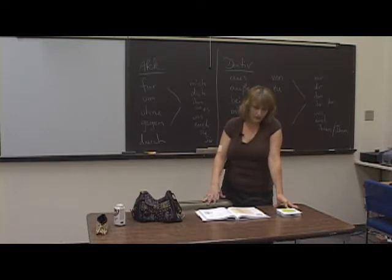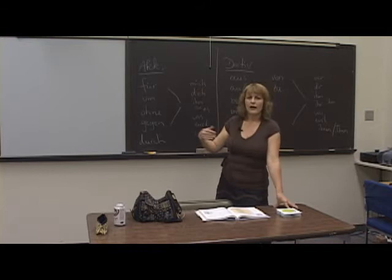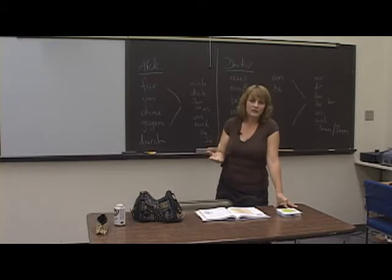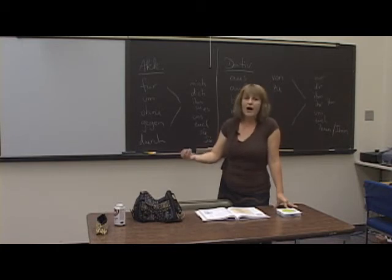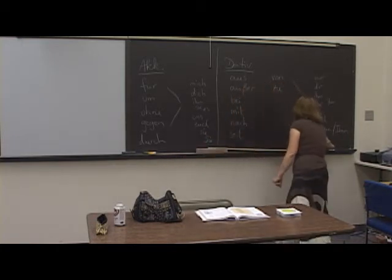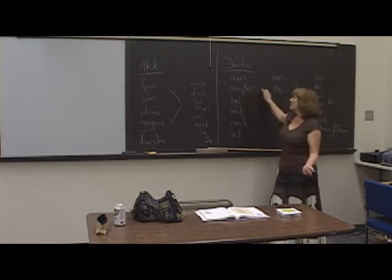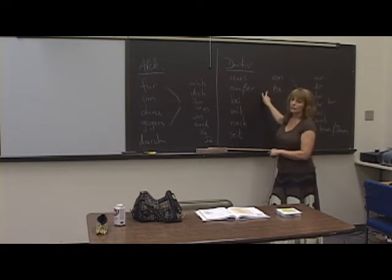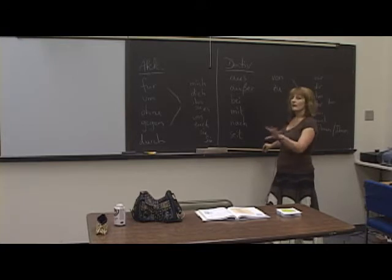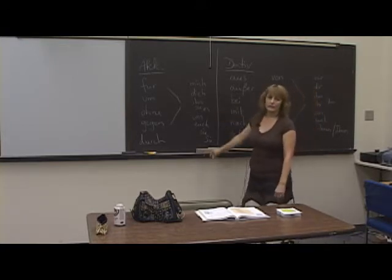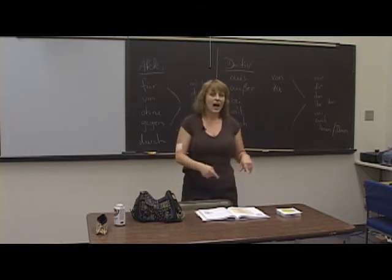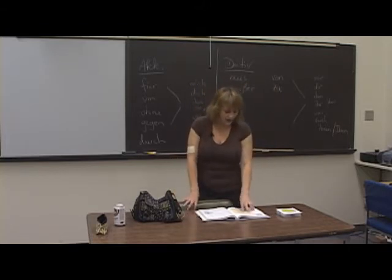'Außer' is pretty straightforward — it simply means 'except for.' For example: 'heute sind alle hier außer meinem Bruder.' It's my birthday party and everyone is there except my brother. When you use a dative preposition, you have to use a dative ending. 'Außer meinem Bruder' — with the -em ending. 'Ich habe alle eingeladen, außer meinem Bruder.'